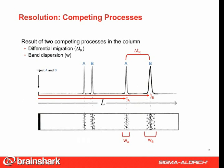At the point where A and B are injected onto the column, they appear as a single unresolved peak. But as the mobile phase transports the compounds down the length of the column, the two peaks become resolved or separated as they interact differentially with the stationary phase. At the same time, the solute molecules are spreading out as they migrate down the column.